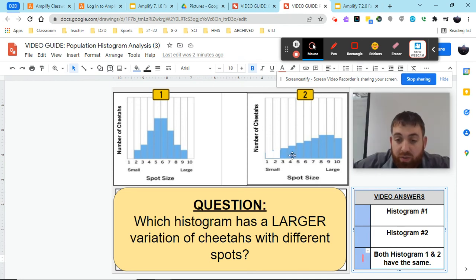And histogram number two has 3 through 10, so 1, 2, 3, 4, 5, 6, 7, 8 as well. So when we're looking at which of these has more, we have 8 and 8, so the answer is both have the same.